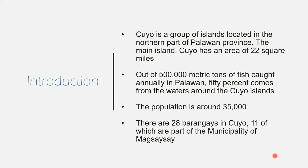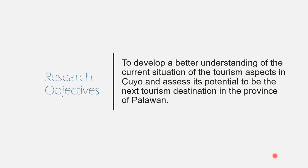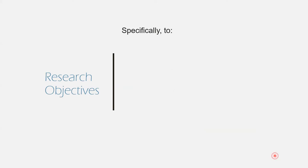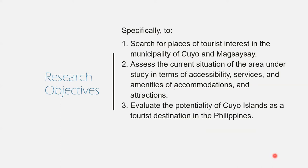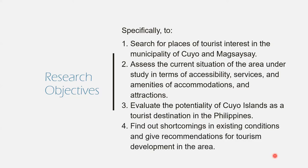This is why I chose this area as the focal point of my study. The aim of this research is to develop a better understanding of the current situation of the tourism aspects in Cuyo and assess its potential to be the next tourism destination in the province of Palawan. Specifically, my objectives are: to identify the places in Cuyo and Magsaysay that have tourism potential; to determine the present condition of potential sites in terms of accessibility, services, and amenities; to evaluate the potentiality of Cuyo Islands as a tourist destination; and to find out problems in existing conditions and give recommendations for tourism development.